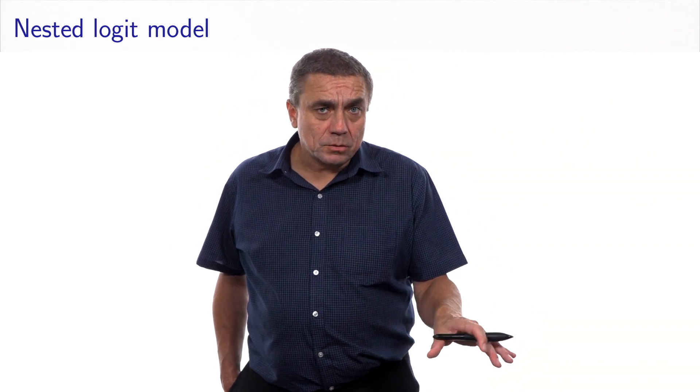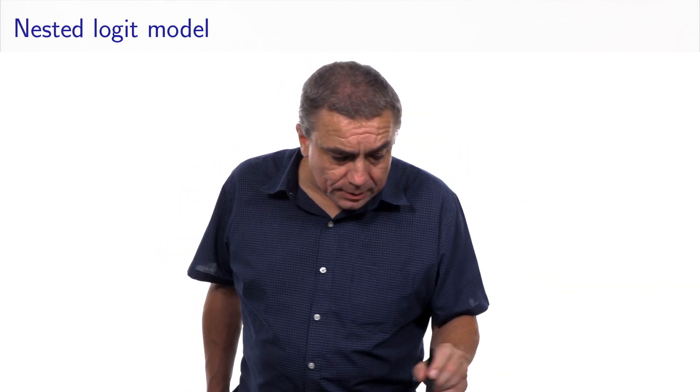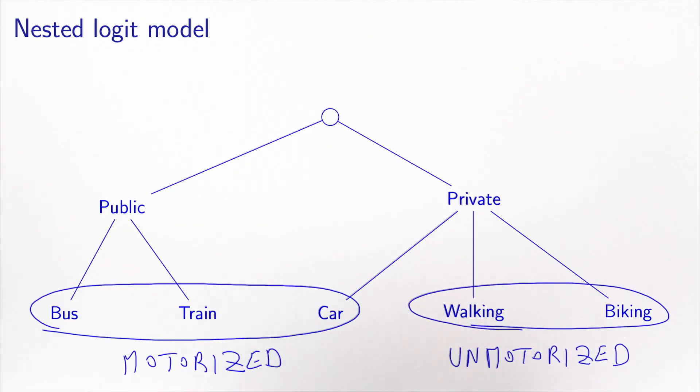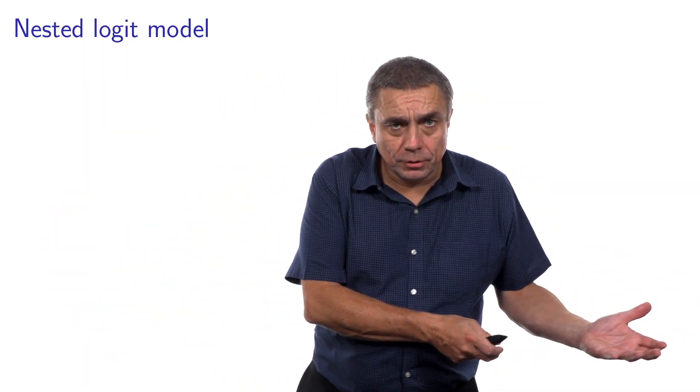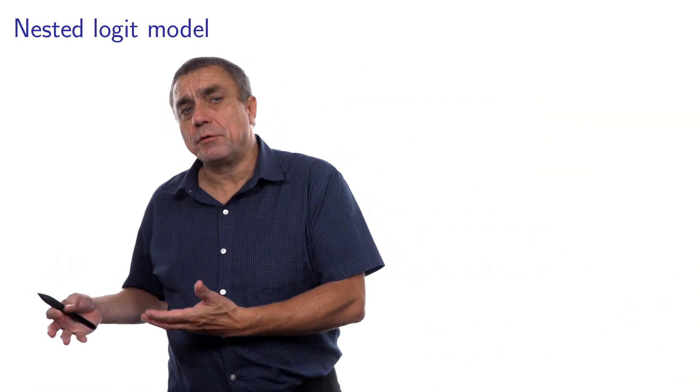So my colleague said, well, this is important. So I need to capture the fact that these alternatives are correlated because they are motorized. And the structure that you propose assumes that car is independent from bus and train. So this would not capture this correlation. Therefore, my colleague prefers this structure, where the two nests are the motorized nests containing bus, train, car, and the unmotorized nest that contains walking and biking. And we started arguing. I prefer my nested structure, and he says that he prefers his nesting structure. But we cannot choose both.